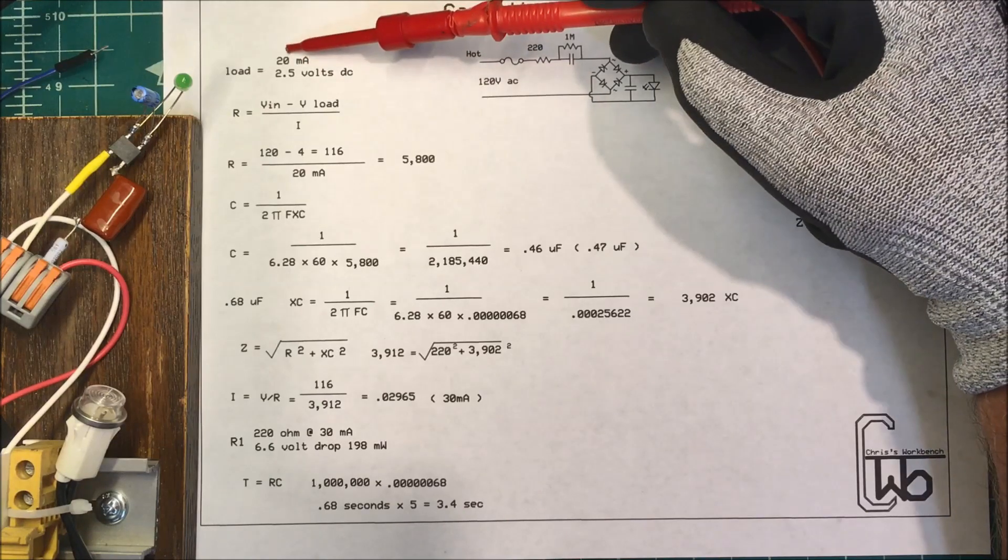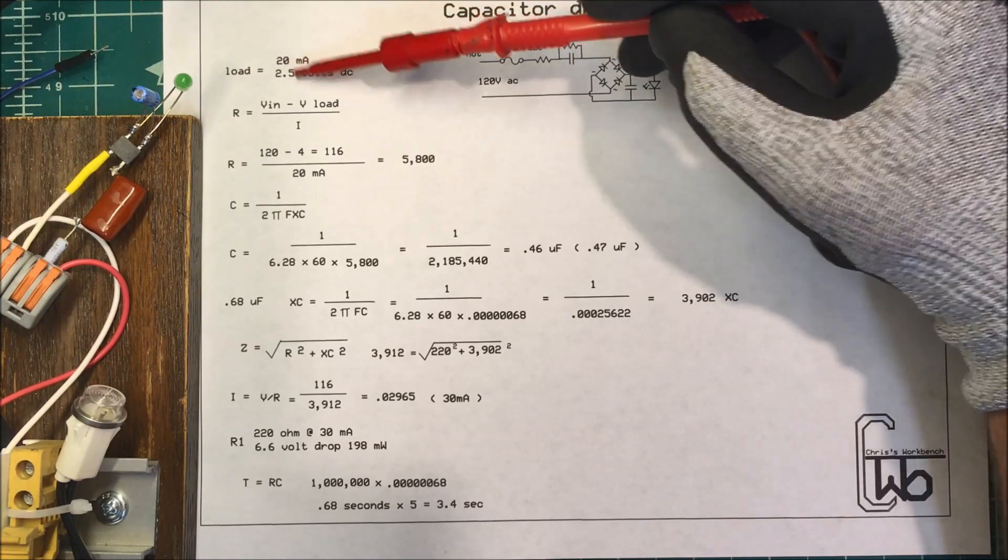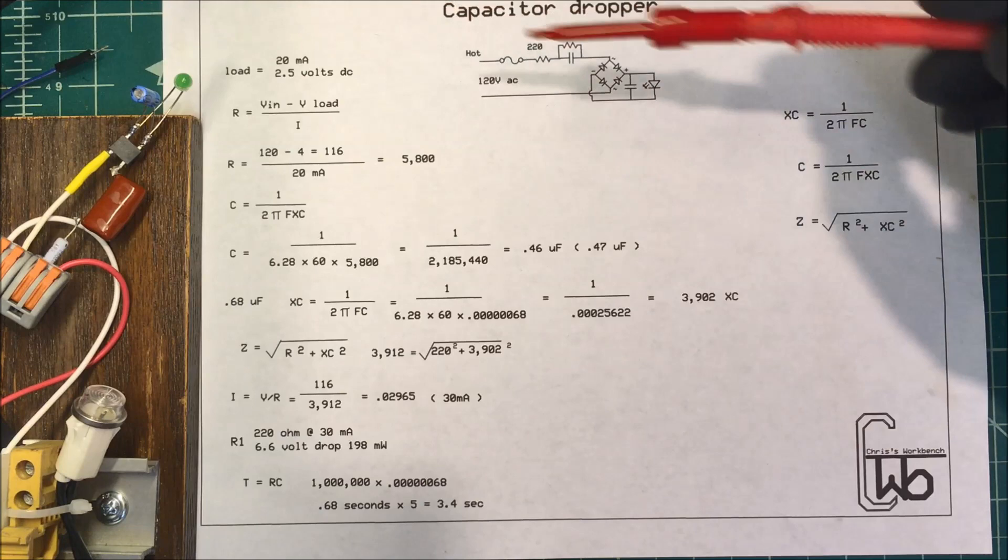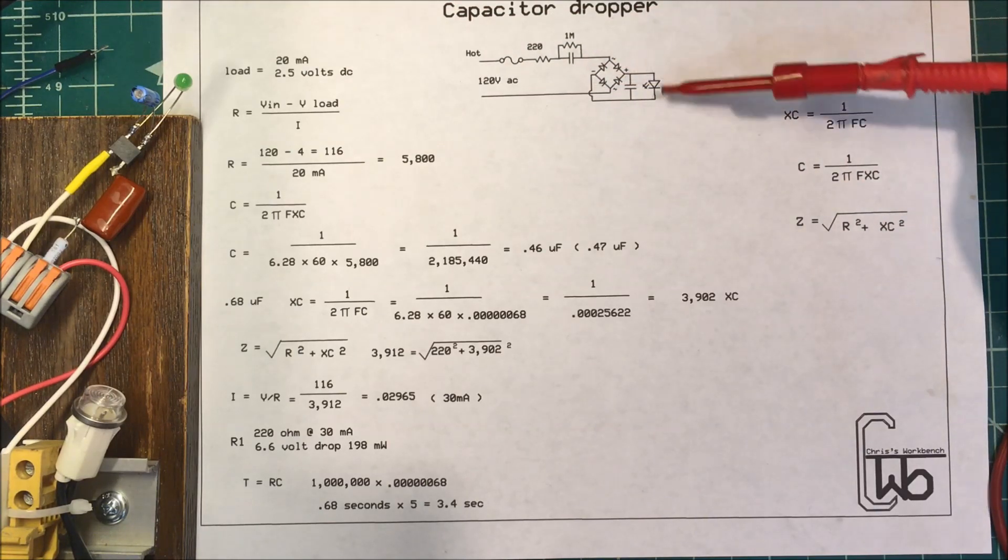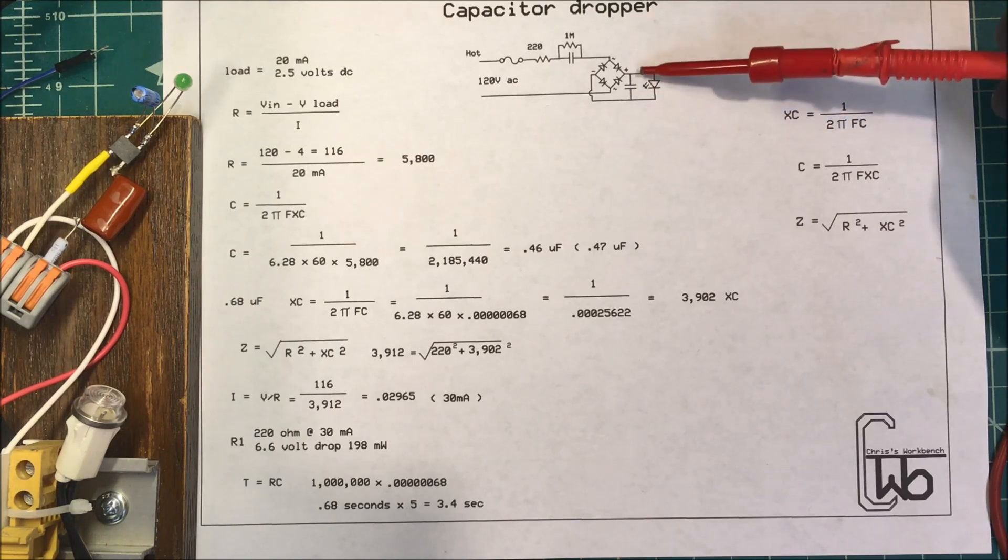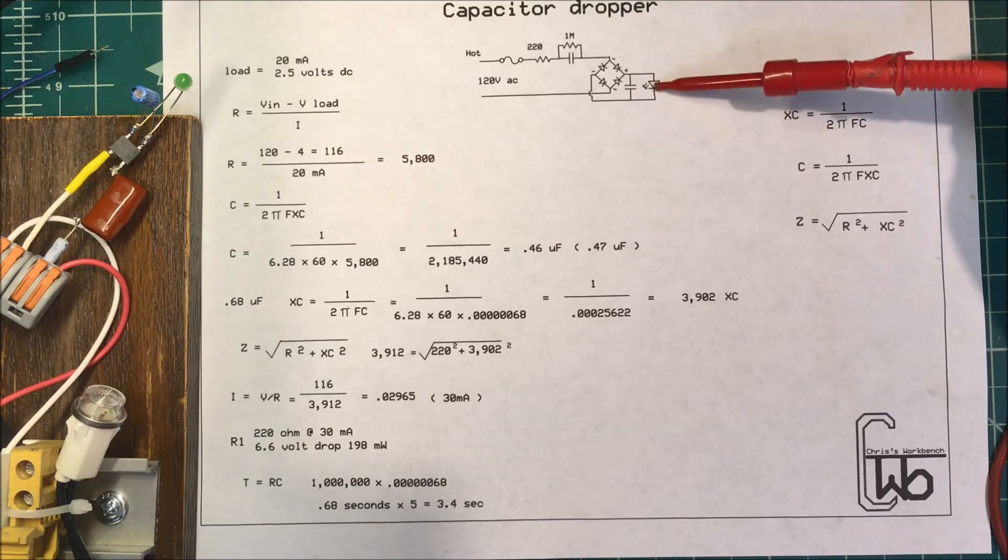I looked up the spec sheet and it says the LED draws 20 milliamps at 2.5 volts DC. Now I'm thinking I'll drop 4 volts across the bridge rectifier and then whatever voltage I get out of here I can adjust with a resistor in series with the diode.